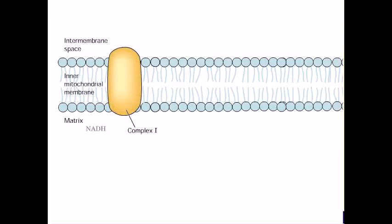Complex 1 transports electrons from NADH to coenzyme Q. It contains more than 40 protein subunits, a bound flavin mononucleotide (FMN), and numerous iron-sulfur centers. It translocates 4 protons to the intermembrane space per NADH oxidized.